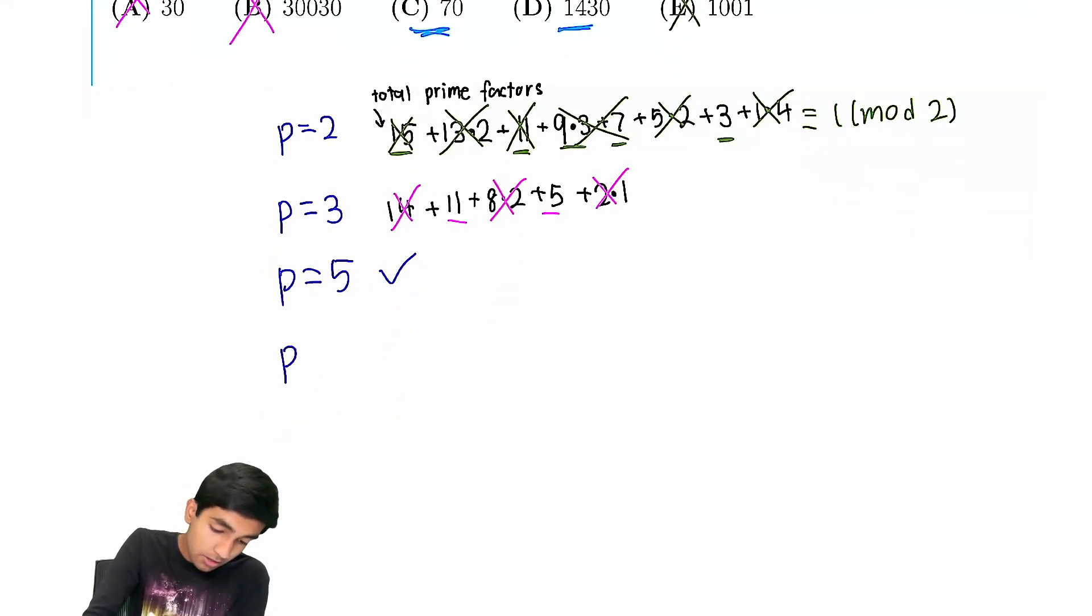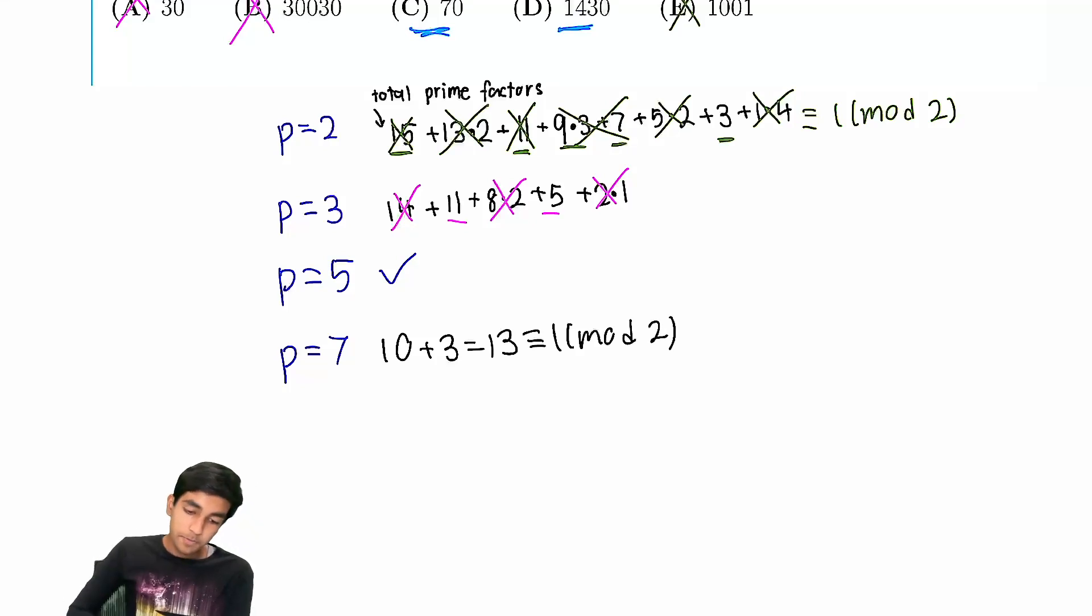So, p equals 7. We do the same analysis here. From 7 to 16, we have 10 such numbers. So, we have 10 factors of 7 there. From 14 to 16, we have 3 additional factors of 7. So, we have 13 total factors of 7, which is 1 mod 2. And therefore, we need a factor of 7.